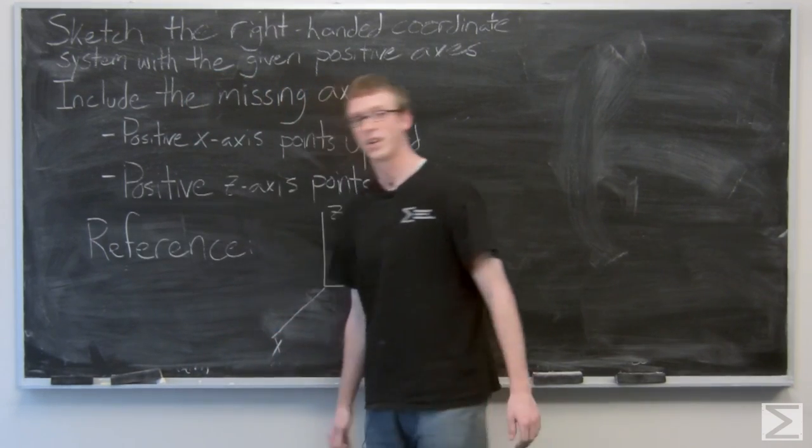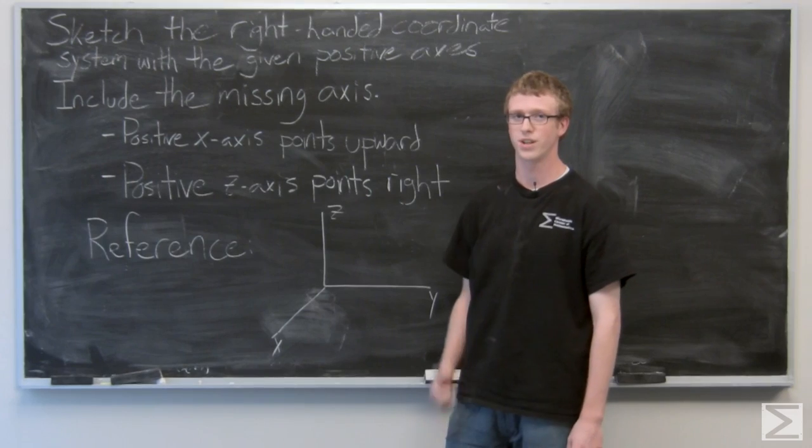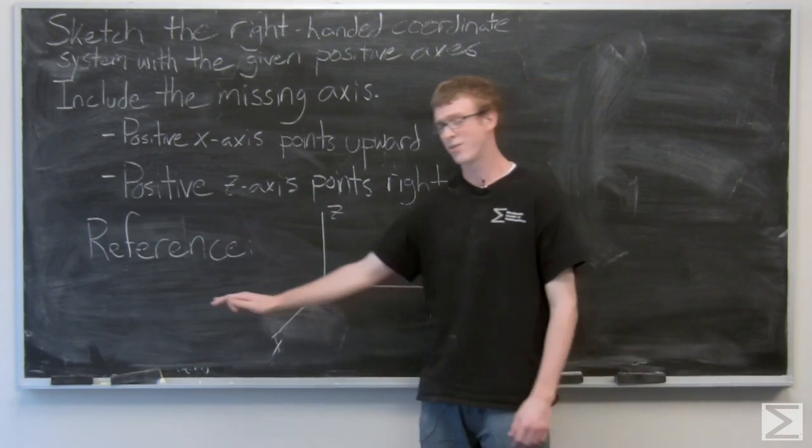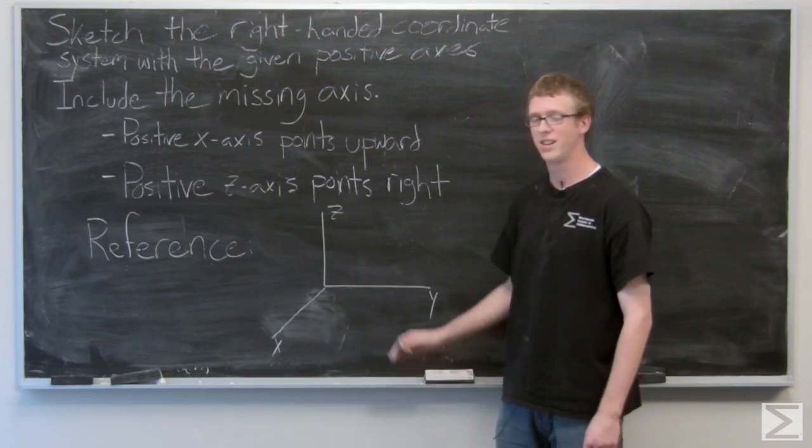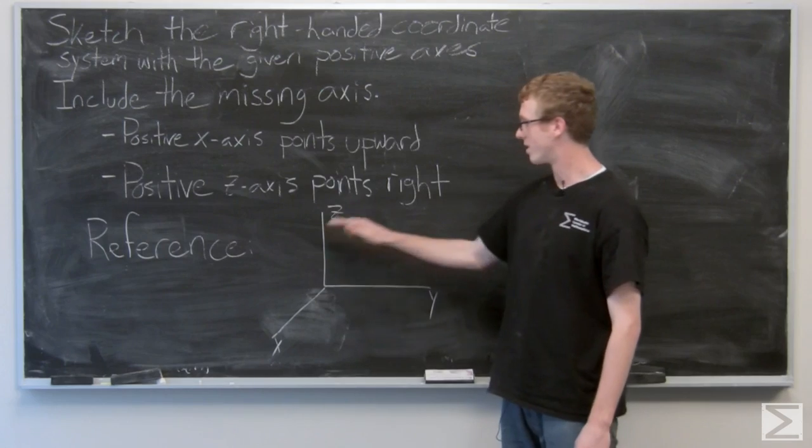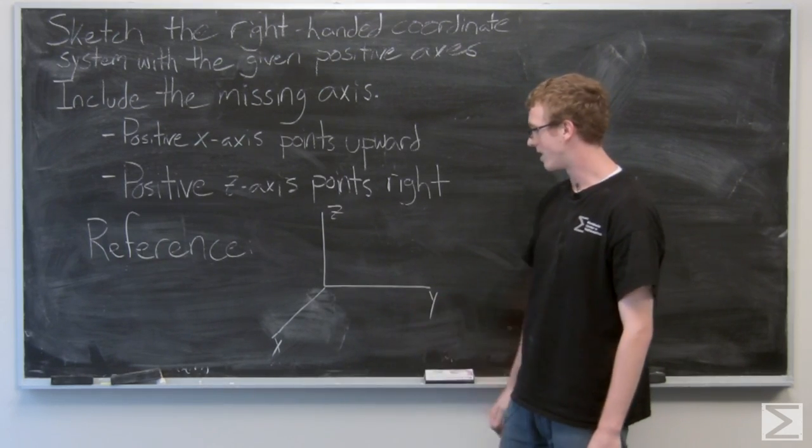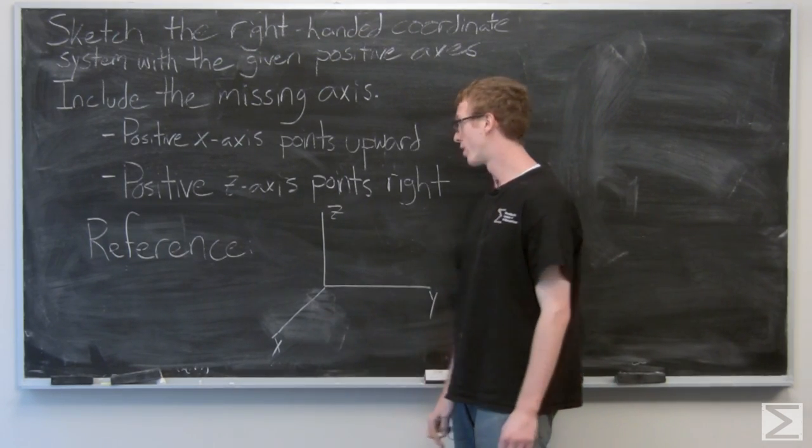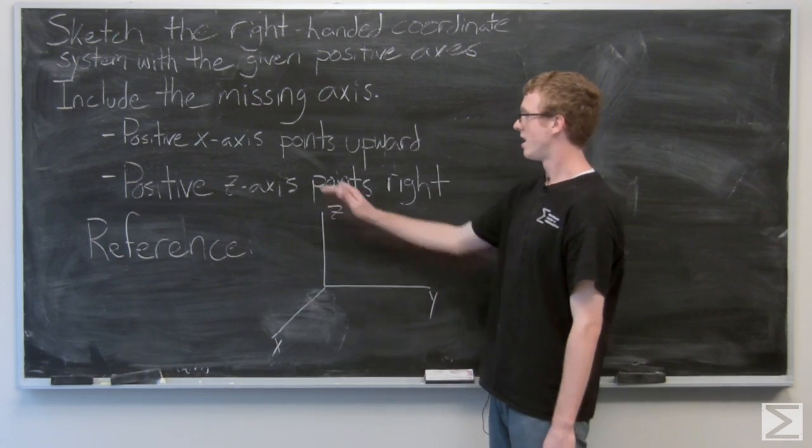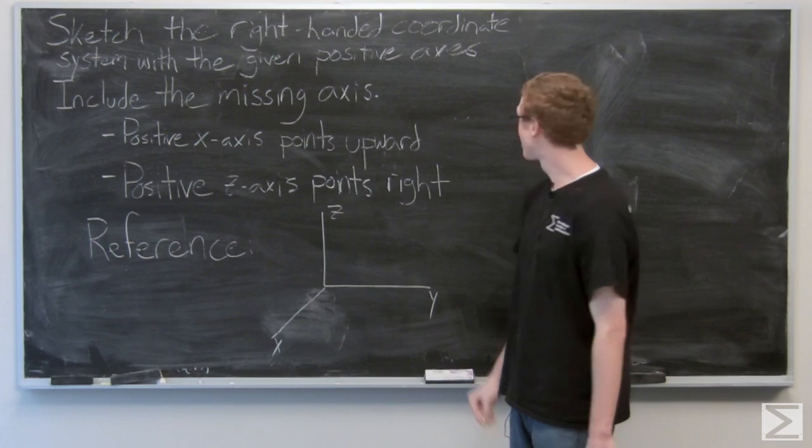So problem number 24 gives us that the x-axis is pointed up and the z-axis is pointed to the right. Now, as a reference, I've already drawn out the normal, what we might think is the normal 3D coordinate system with the z-axis pointed up, the y to the right, and the x coming out of the board. We're asked to have the positive x-axis up and the positive z-axis to the right, so I'm going to sketch that.